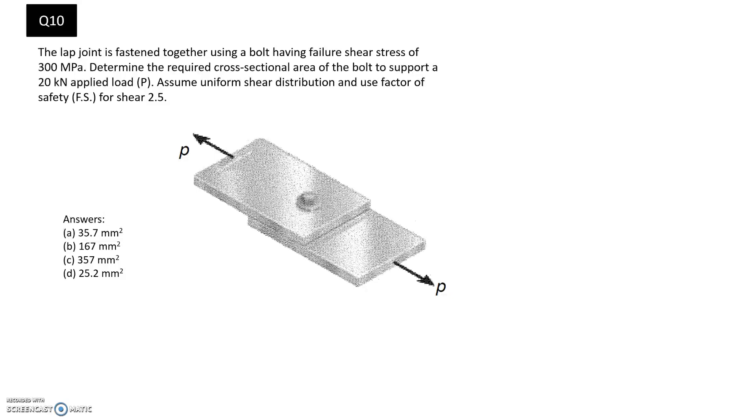So I'm just going to quickly jot down all the information that we're given. We know that we have a failure stress in shear of 300 megapascals. We're asked to find the cross-sectional area, so that's A, and the force that's applied is 20 kN, and we have to use a safety factor of 2.5.